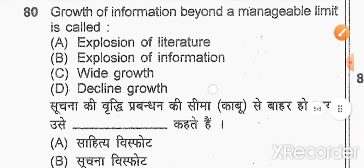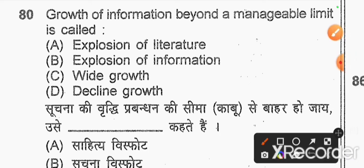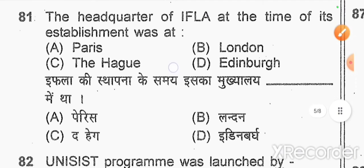Question number 80: growth of information beyond a manageable limit is called — option B — right answer: explosion of information. Question number 81: the headquarters of IFLA at the time of its establishment was — IFLA was founded in Scotland in 1927.